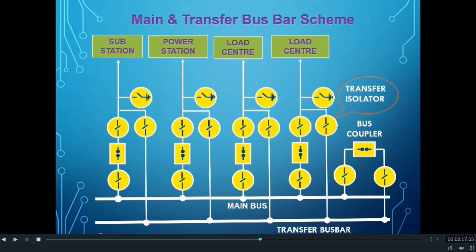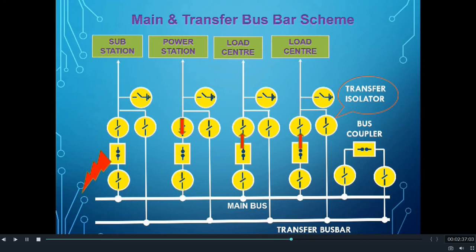Let us see how this scheme works. In normal condition, Main and Transfer Busbar Scheme works like a Single Main Busbar Scheme only. All the feeders are connected to a single Busbar, that is the Main Bus, and the transfer isolators of the feeders are generally kept open. In case of a fault in any one of the feeders — that is, any circuit breaker of a feeder — the feeder becomes out, but all the remaining feeders work normally, which is the same as the Single Busbar Scheme.